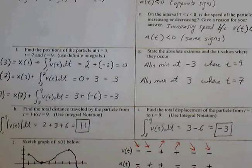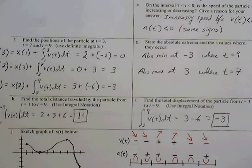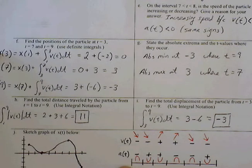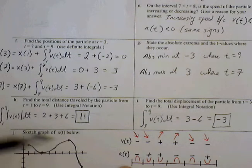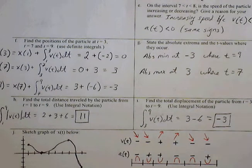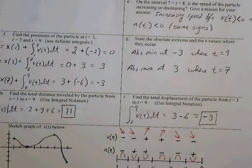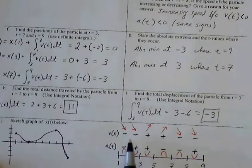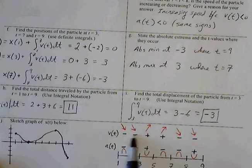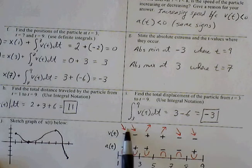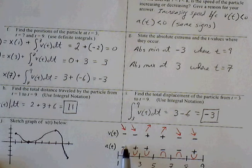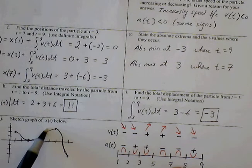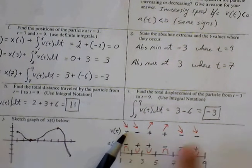Part J, sketch the graph below. We have the ordered pairs given to us, which is 1, 2. From part F, we also found 3, 0; 7, 3; and then finally 9, negative 3. From the sign line that we created from part A, I just put all those on the same sign line, attach negatives and positives for each interval. Negatives is negative slope for velocity, and negatives and positives will be indicated by concavity for acceleration.